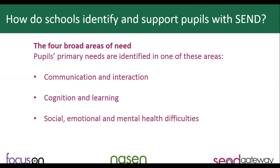The third area is social, emotional and mental health difficulties — a child who is struggling with perhaps very severe anxiety or social issues, and may be presenting with quite challenging behaviour. But the question is: what's going on for them, and is there a mental health issue that we need to be aware of? The fourth area is sensory and/or physical needs — this includes hearing impairment, visual impairment and physical impairments such as cerebral palsy. Children in that final category tend to be identified quite early, whereas the other three categories tend to be identified later.